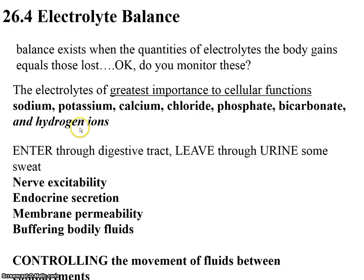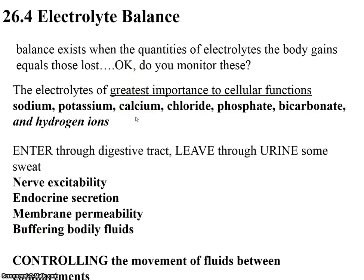Hydrogen ions are also important since that has to do with acid-base balance. Your electrolytes enter through the digestive tract — that's where you get most of them, coming in through the foods and fluids you take in daily. They leave through urine and some sweat. Their jobs include nerve excitability — sodium, potassium, calcium — endocrine secretion, membrane permeability, especially calcium, and buffering bodily fluids — that's really bicarbonate's role. Foremost, these electrolytes control the movement of fluids between compartments, because water follows them — that's the osmotic pressure we talk about.